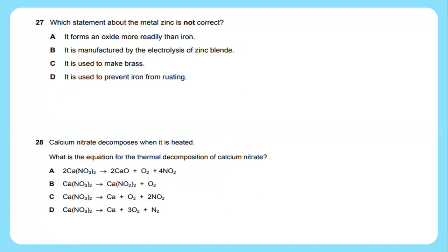Question 27: Which statement about the metal zinc is not correct? Metal zinc is usually produced through a different process called roasting and reduction. In this question, he asked about what statement is not correct with regards to metal zinc. So the answer would be it is manufactured by electrolysis of zinc blende.